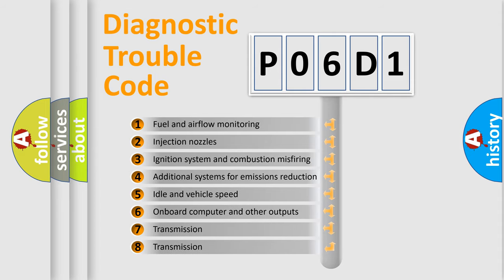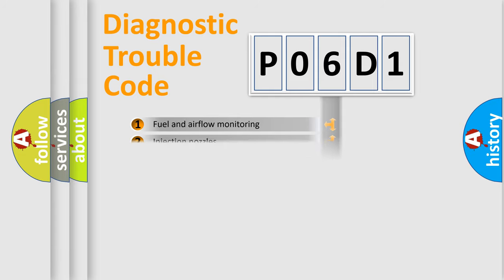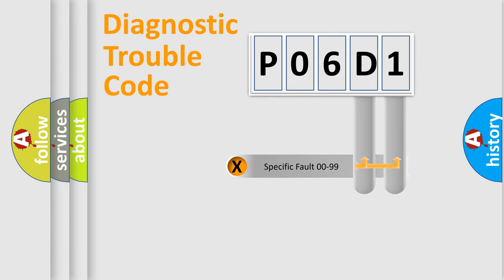The third character specifies a subset of errors. The distribution shown is valid only for the standardized DTC code. Only the last two characters define the specific fault of the group.